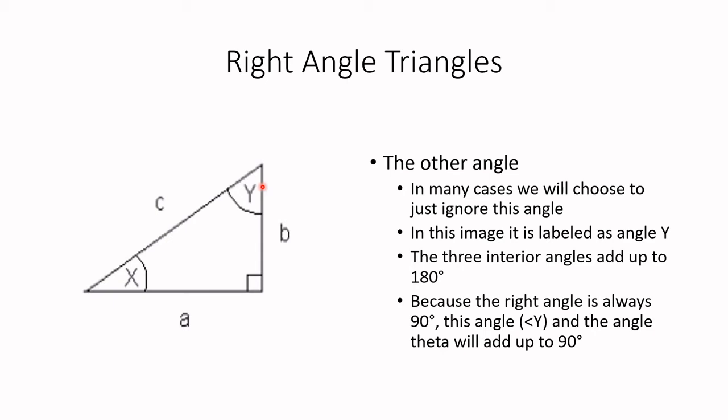So I didn't include the equation here, but the math would be that this angle, this other angle is simply 90 degrees minus our angle theta. And we can always calculate this other angle. Sometimes that might be helpful for us. Most of the time, we kind of don't care a whole lot.